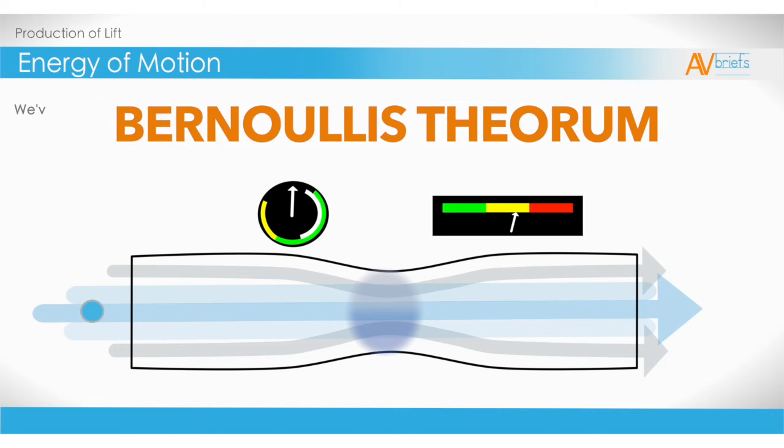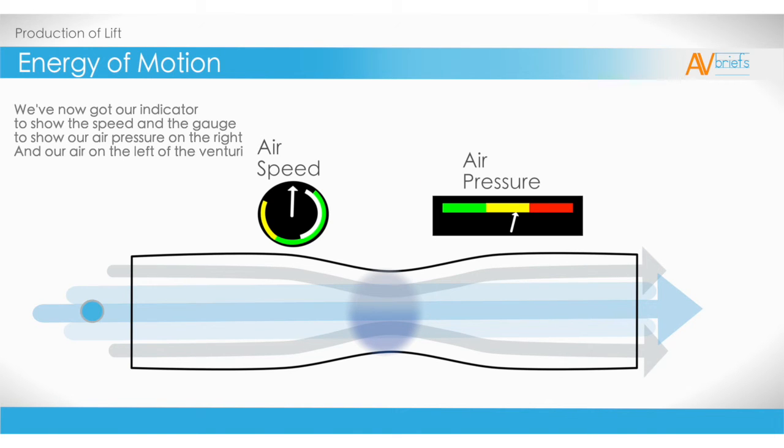We've now got our indicator to show the speed of the airflow, and our gauge to show our air pressure, which is on the right. And our air molecule with all its friends trying to enter the venturi is on the left.